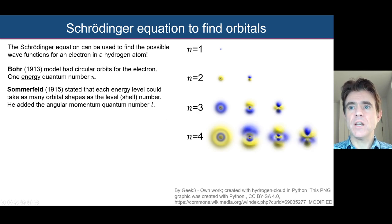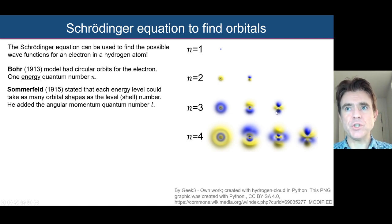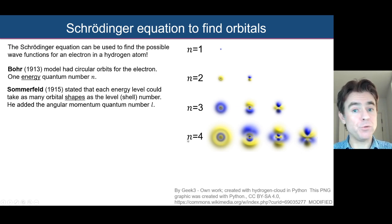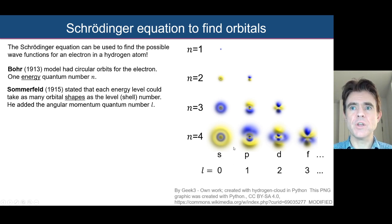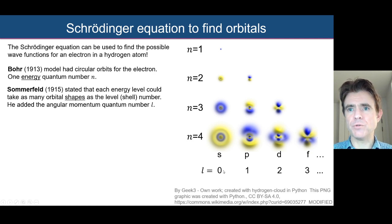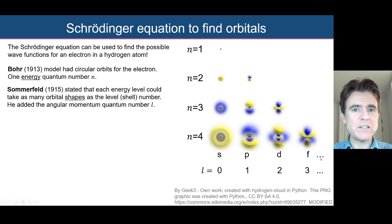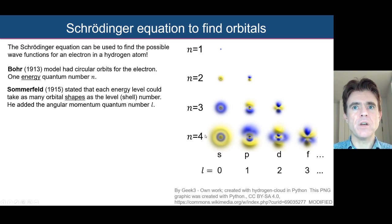At energy level n=4 we get four different shapes labeled L = 0, 1, 2, 3 and so on, corresponding to the old spectral notation: S for sharp, P for principal, D for diffuse, and F for fine, which were related to observations of light emission from hydrogen and other atoms.